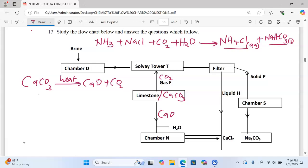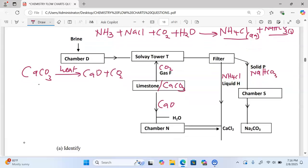The two are separated by filtration, where we have liquid H as ammonium chloride and solid P as sodium hydrogen carbonate. Sodium hydrogen carbonate gets into chamber S, known as the roaster.